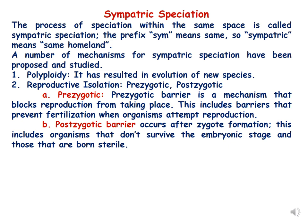Reproductive isolation can be due to prezygotic or postzygotic barriers. A prezygotic barrier is a mechanism that blocks reproduction from taking place, including barriers that prevent fertilization when organisms attempt reproduction. Postzygotic barriers occur after zygote formation and include organisms that don't survive the embryonic stage and those that are born sterile.